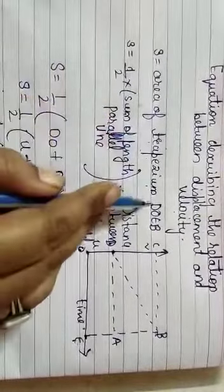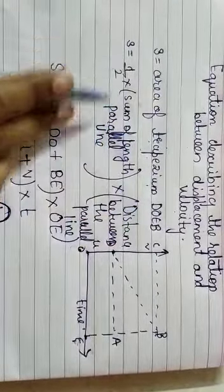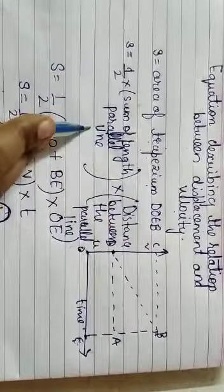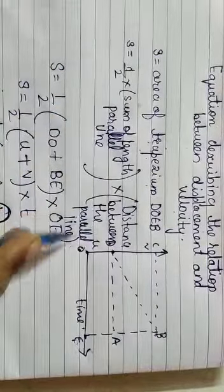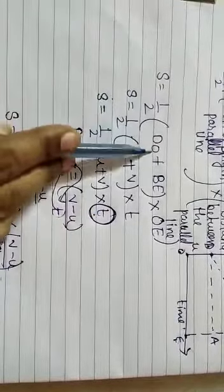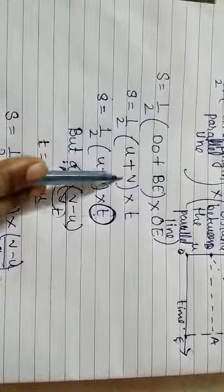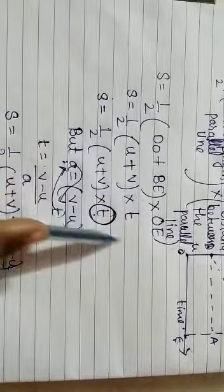Area of trapezium DOEB, where we will take the formula: half is equal to sum of the length of parallel sides into distance between the parallel lines. What is my sum of the parallel sides? DO plus BE into OE, which becomes u plus v into t. Now we have to remove the value of t.